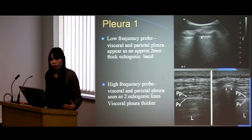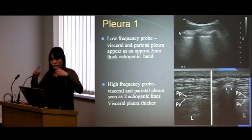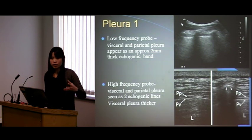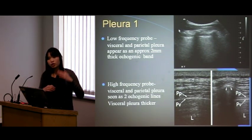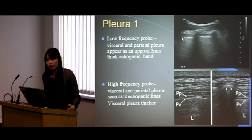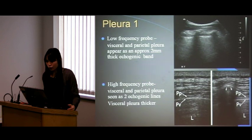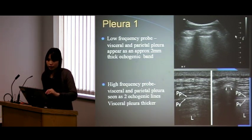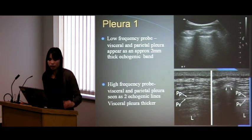Moving on to the pleura: with your low frequency curvilinear probe, you'll be able to differentiate the pleura from the rest of the soft tissues, but the visceral and parietal will appear stuck together as one layer — approximately about two millimeters, a thick echogenic band. Also, watch where your focus is; if you're looking at the pleura, put your focus up there.